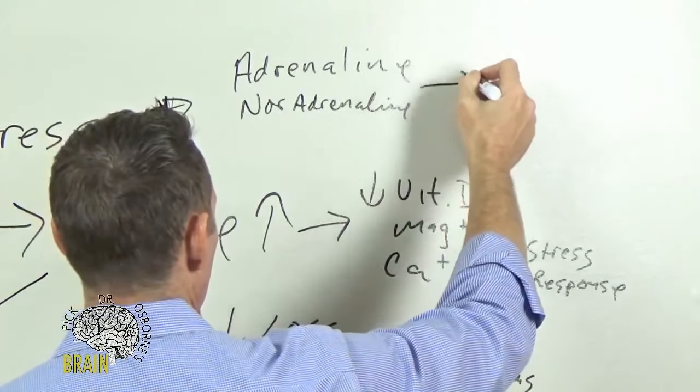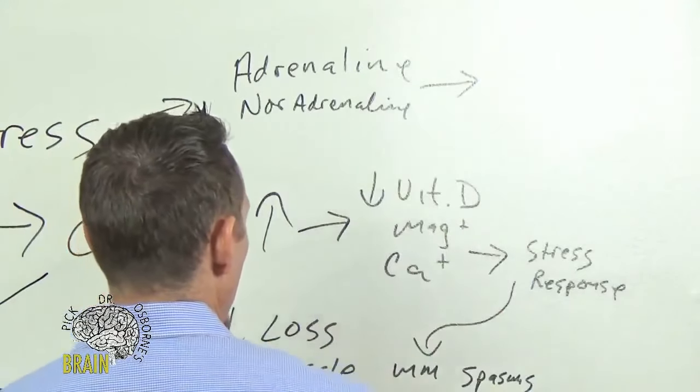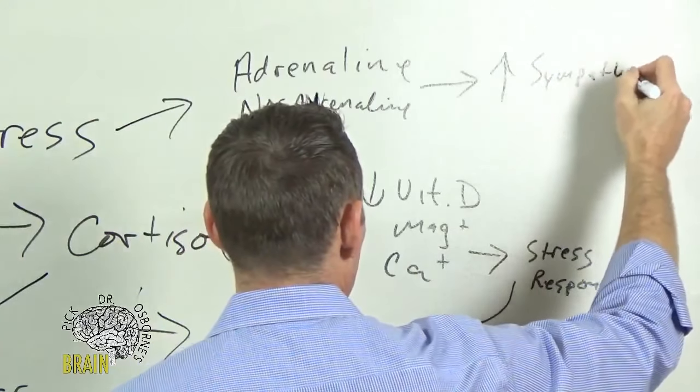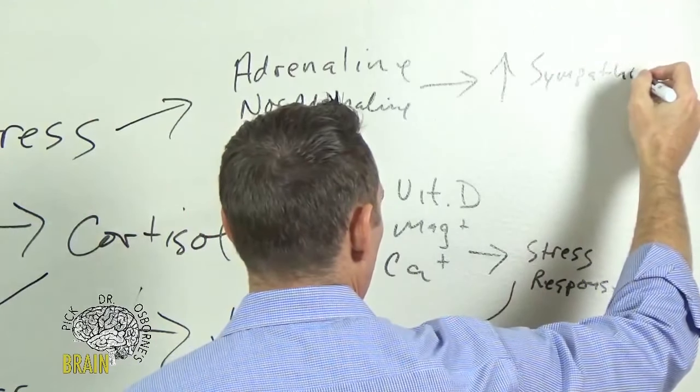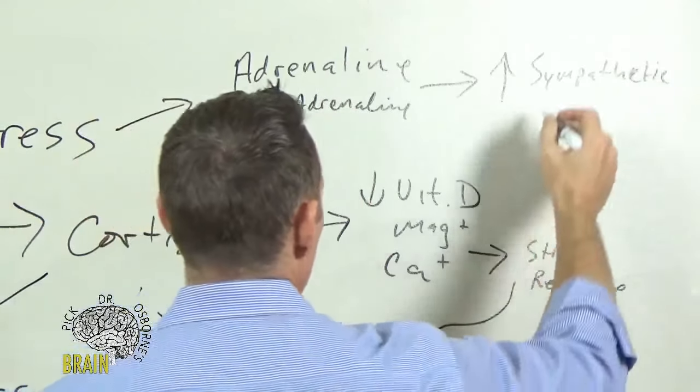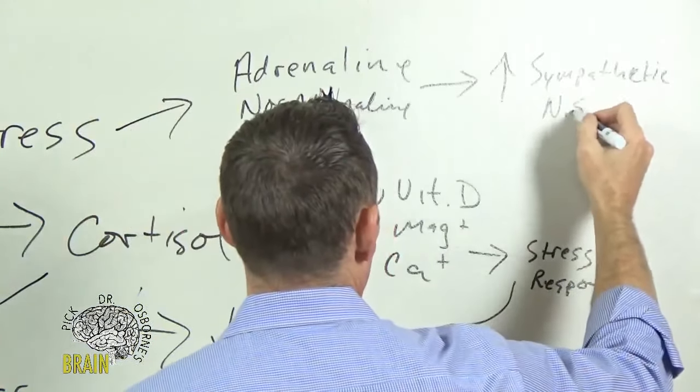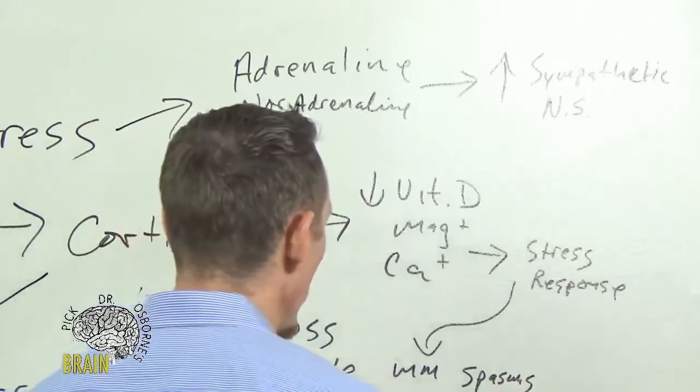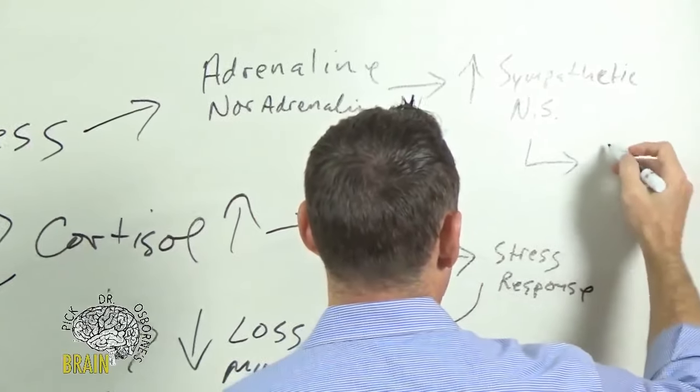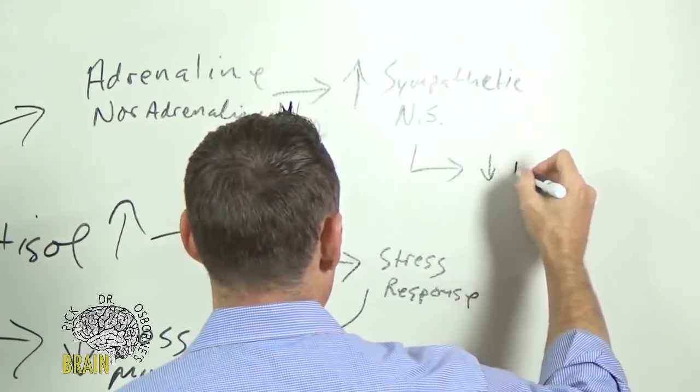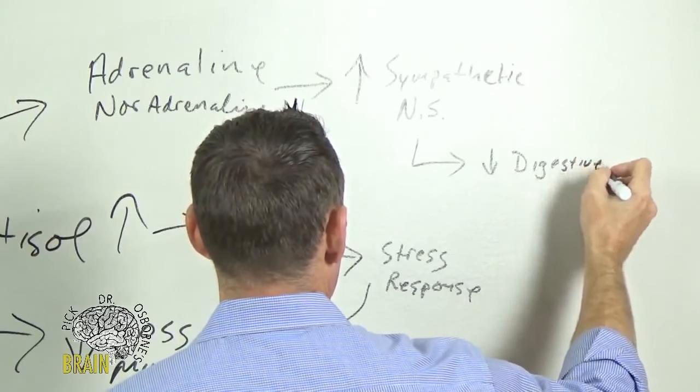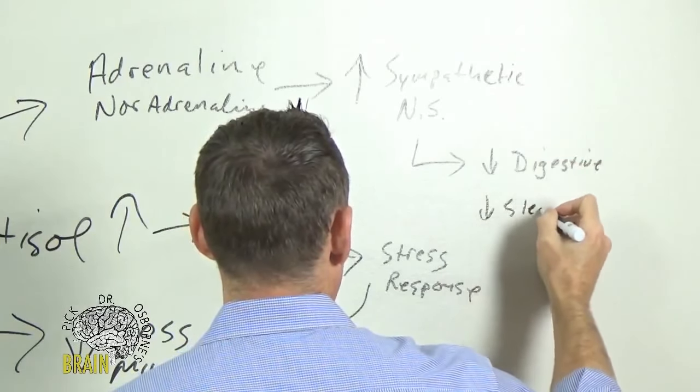Over time these are going to ramp up your sympathetic nervous system, so you get this impact on the fight-or-flight system. If we look at long-term what that does, one, it reduces your ability to digest, so it shuts off your digestive tract.